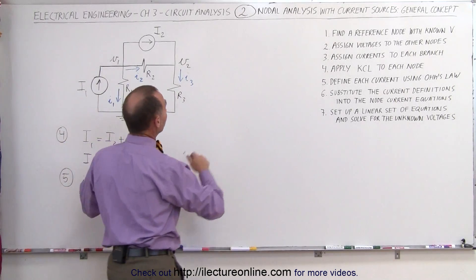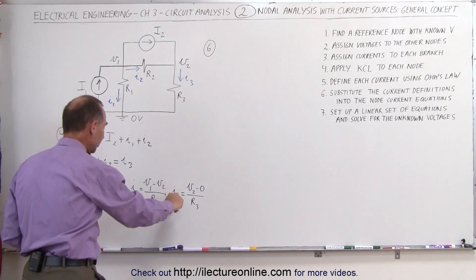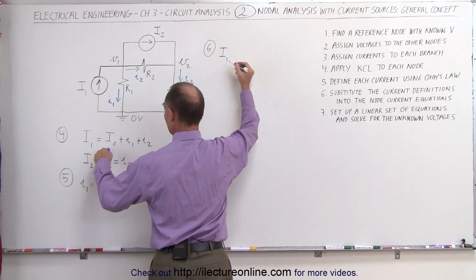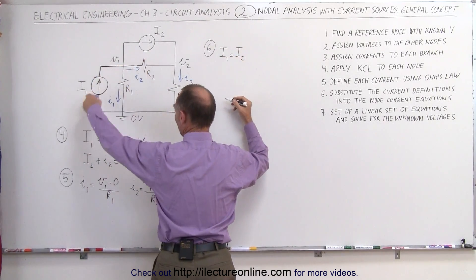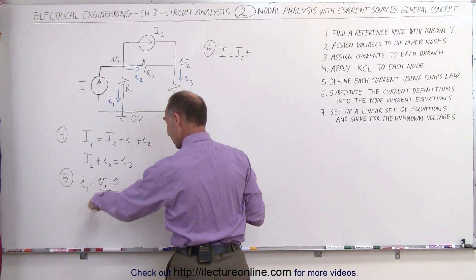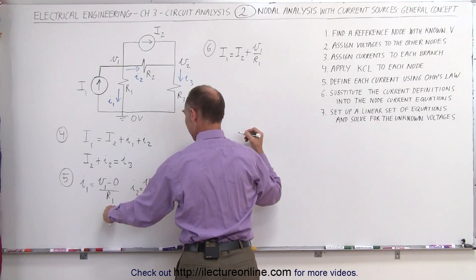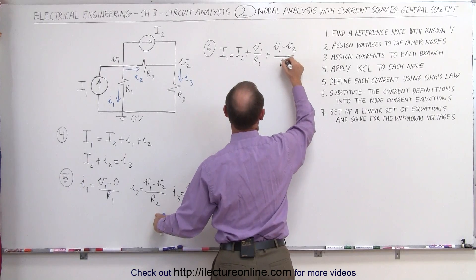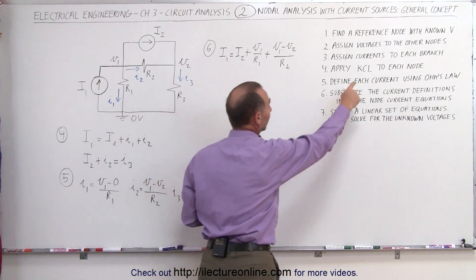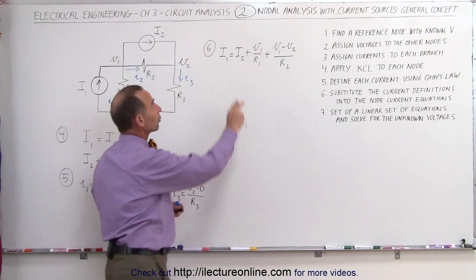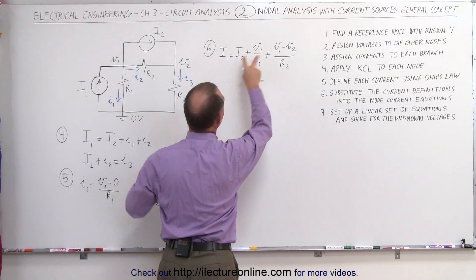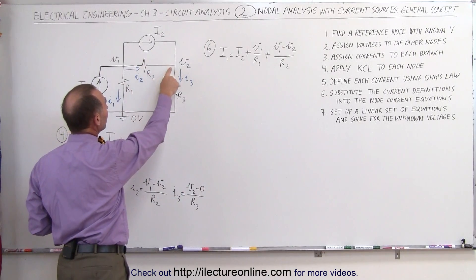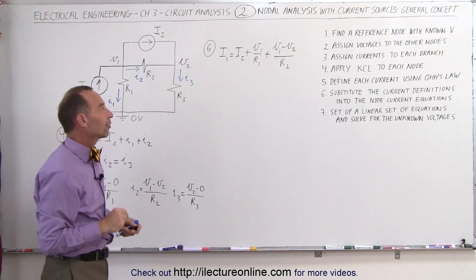Step six: we take these current definitions and plug them back into our two equations. For the first equation, I1 = I2 + i1 + i2 becomes: I1 = I2 + V1/R1 + (V1 - V2)/R2. Note that capital I1 and I2 are known quantities from the current sources. We've now eliminated the branch currents from the equation, leaving only two unknowns — V1 and V2 — so we end up with two equations instead of three.